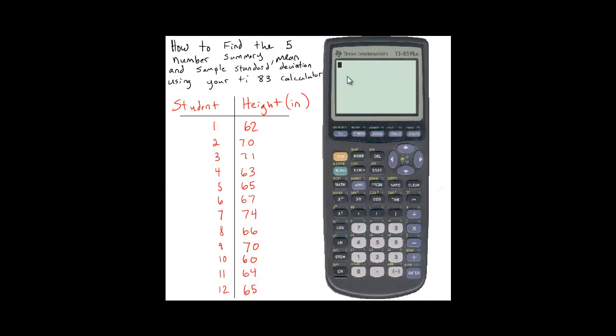Now we're going to use the function one var stat to find the five number summary, the sample mean and the sample standard deviation.